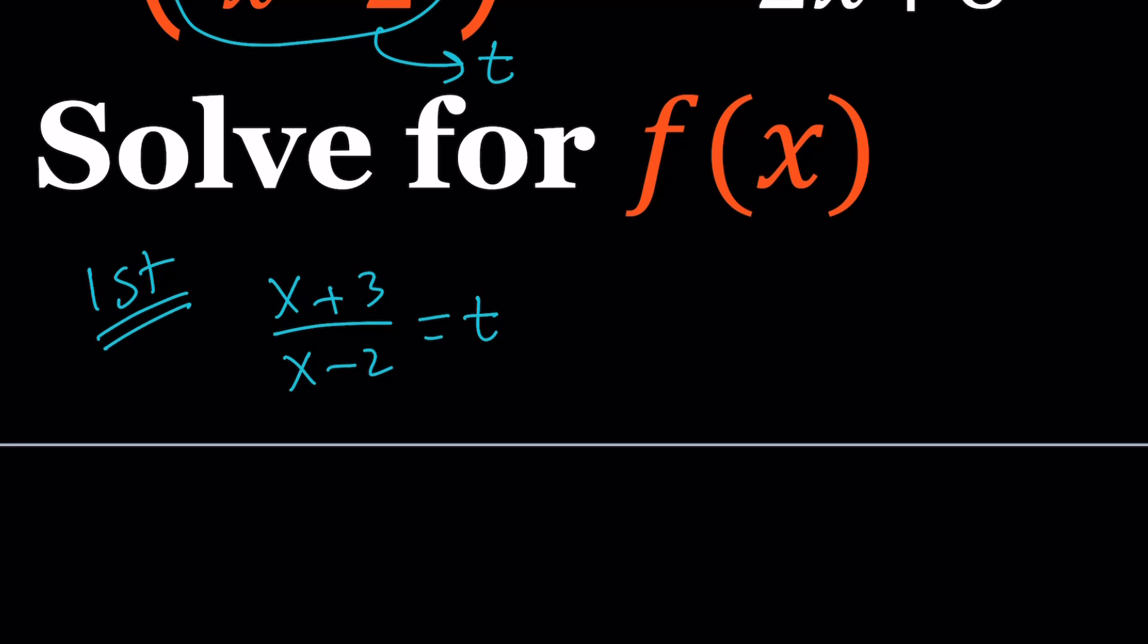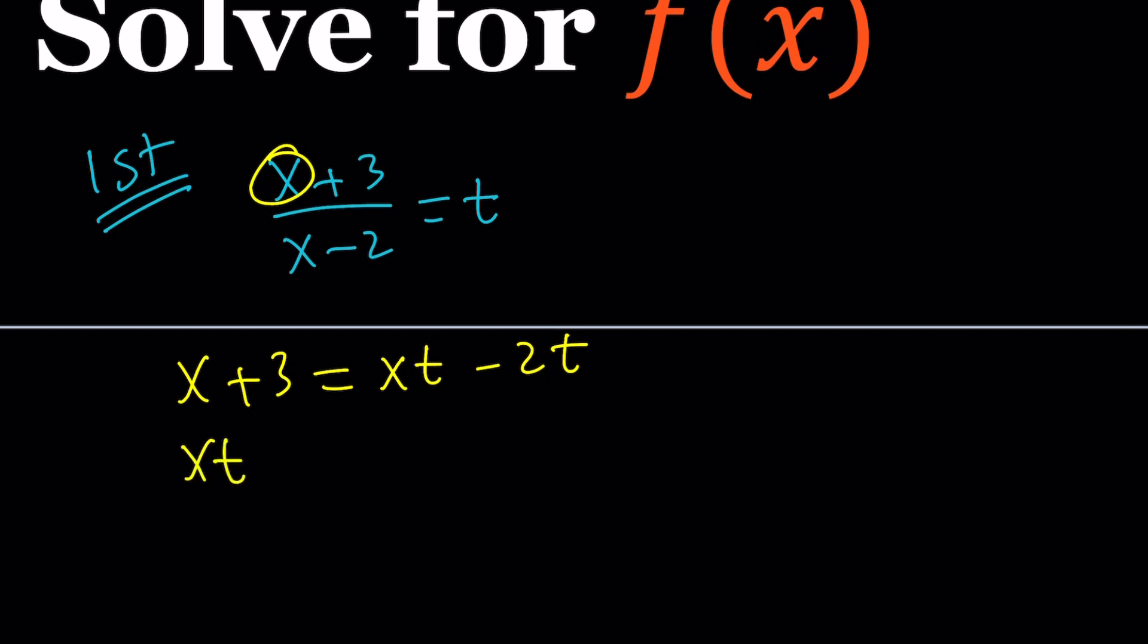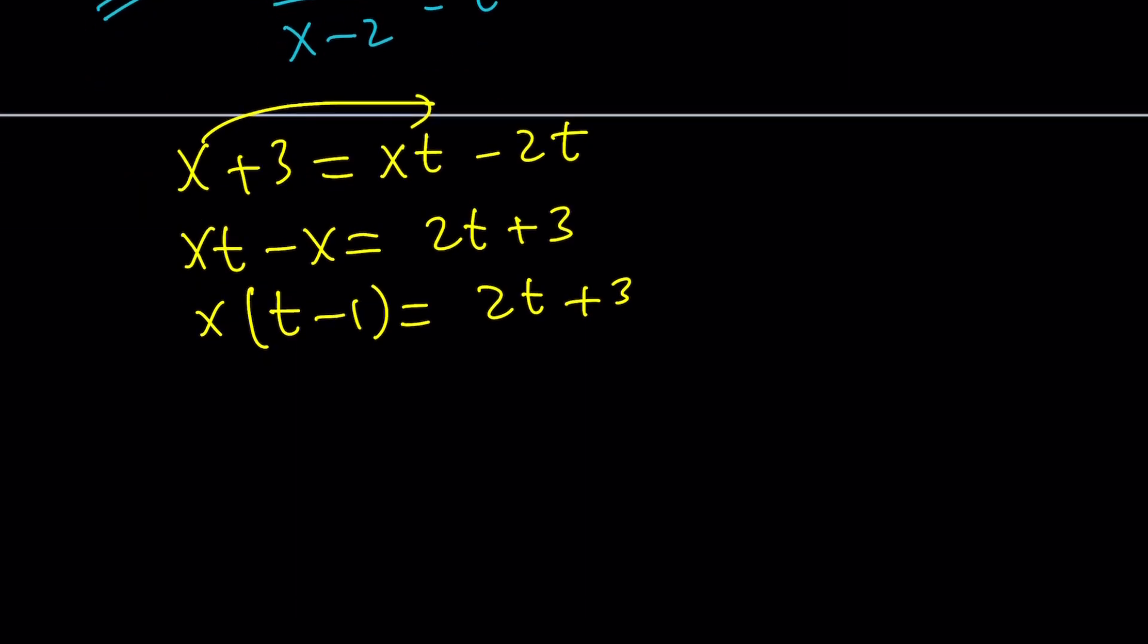Let's go ahead and do it. How can we solve for x? We can go ahead and cross multiply first. And now put the x terms together. xt minus x is equal to, if you bring the x over here, that's going to be 2t plus 3. Factor out an x. In other words, you're finding the inverse of this rational function, but it's going to be in t. And x will be equal to this.